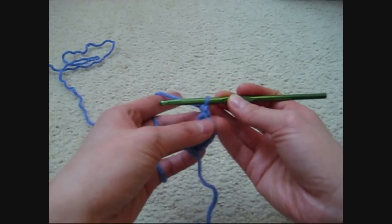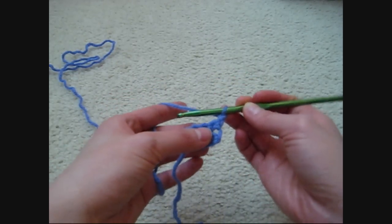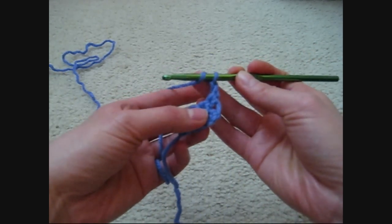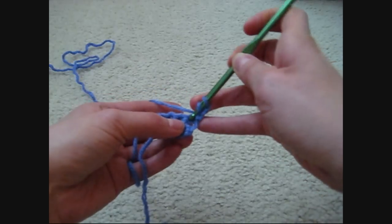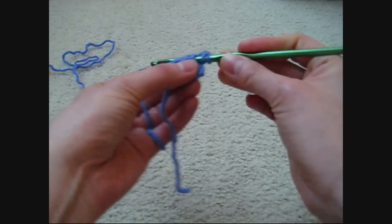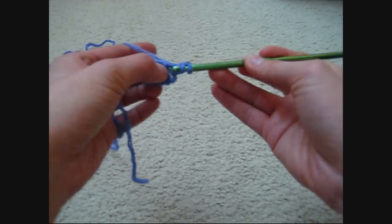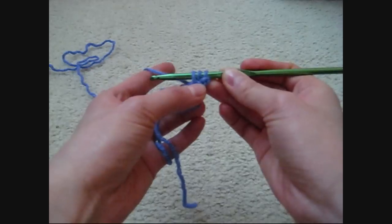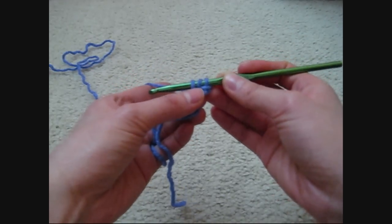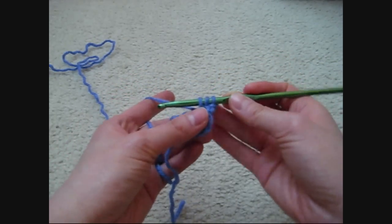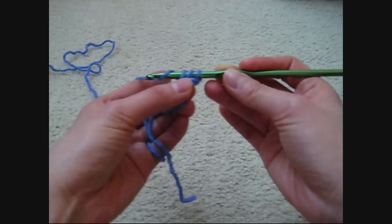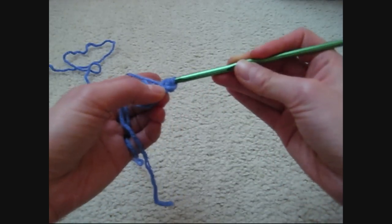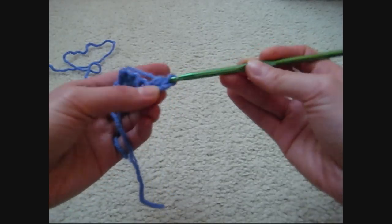You turn your work over and yarn over before you go through the first stitch. Yarn over again, pull the yarn through the stitch, yarn over, and then pull the yarn through all 3 loops.